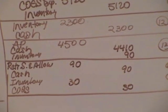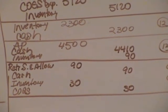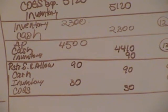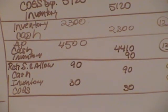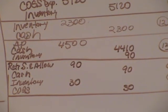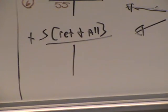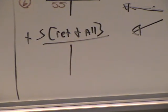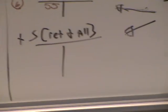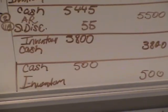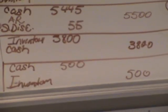We are going to use the sales returns and allowances account — that's the only account we'll use when we have to give money back for a return. Whether it's cash or receivable, it would still be sales returns and allowances if it was an accounts receivable transaction also.